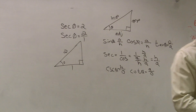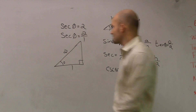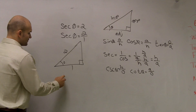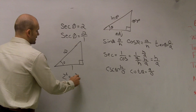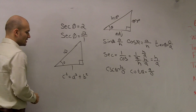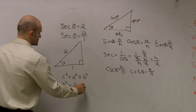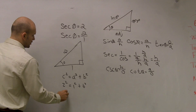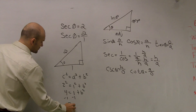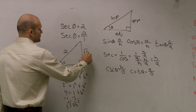We have to find the other trigonometric functions, so we need to find the missing side length using the Pythagorean Theorem. C squared equals A squared plus B squared, so 2 squared equals 1 squared plus B squared. That gives us 4 equals 1 plus B squared, so 3 equals B squared. Taking the square root, B equals the square root of 3.